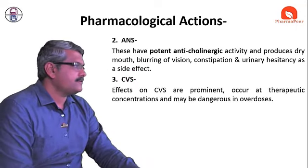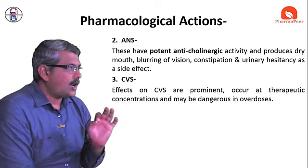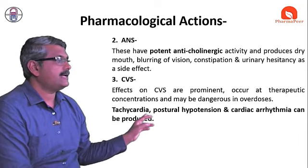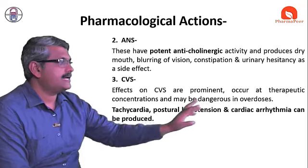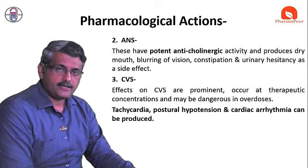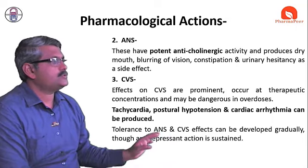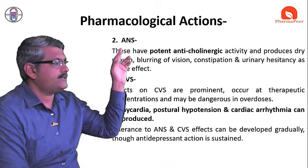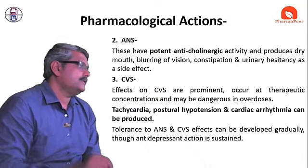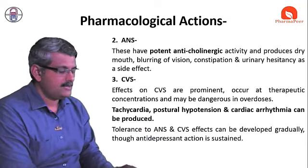The effects on the cardiovascular system are prominent. They occur at therapeutic concentrations and may be dangerous in overdose. These include tachycardia, postural hypotension, and cardiac arrhythmia, which can be noticed at higher doses or in overdose. Tolerance to the cardiovascular and autonomic nervous system effects can gradually develop, though the antidepressant effect is sustained.